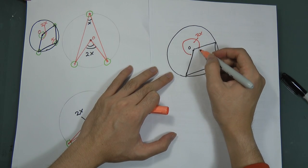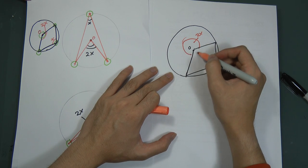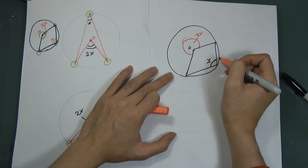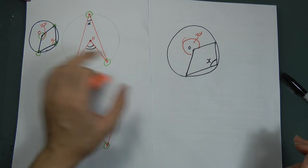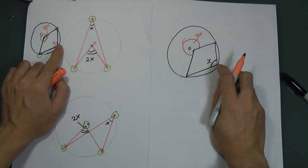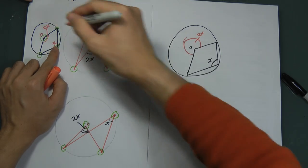So here will be 360 minus 200. Okay, so if this is x, this is 2x. Because in the last video I mentioned this one - if this is x, this is 2x - this is wrong.